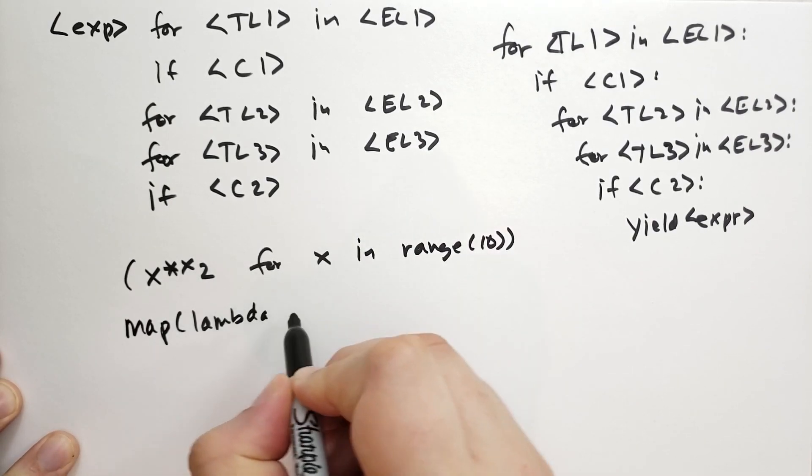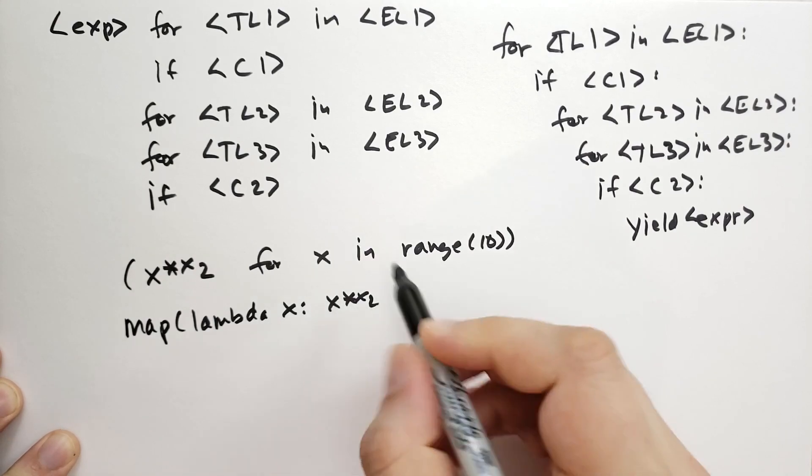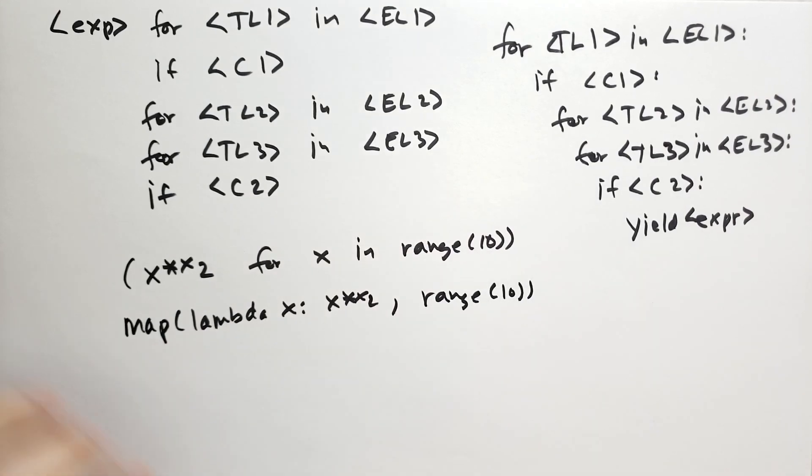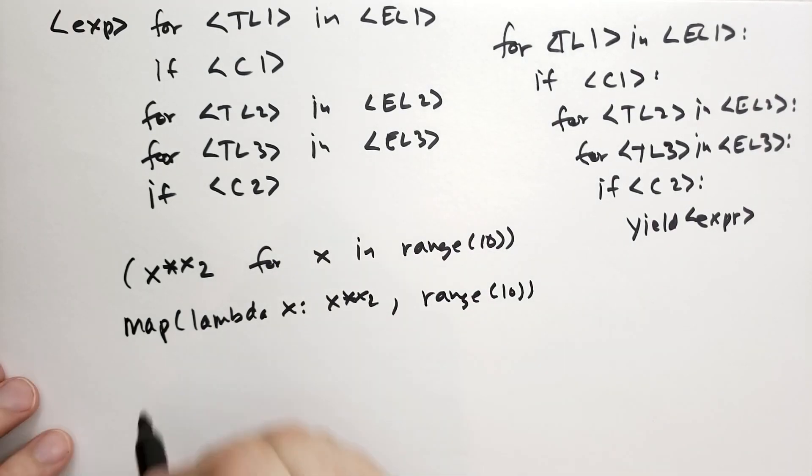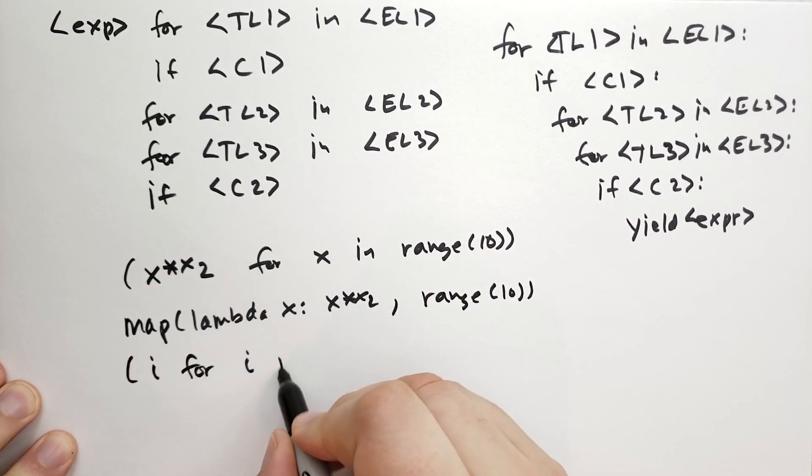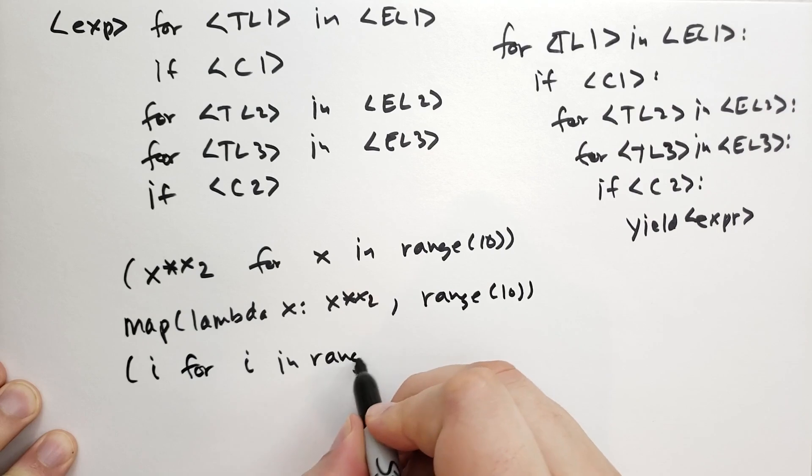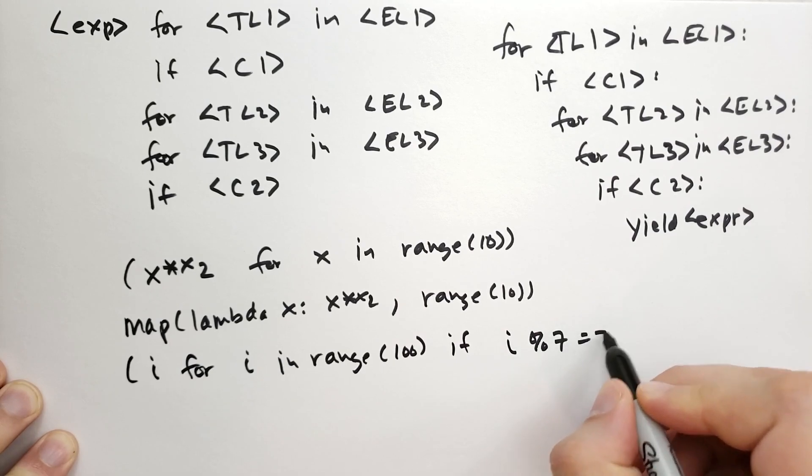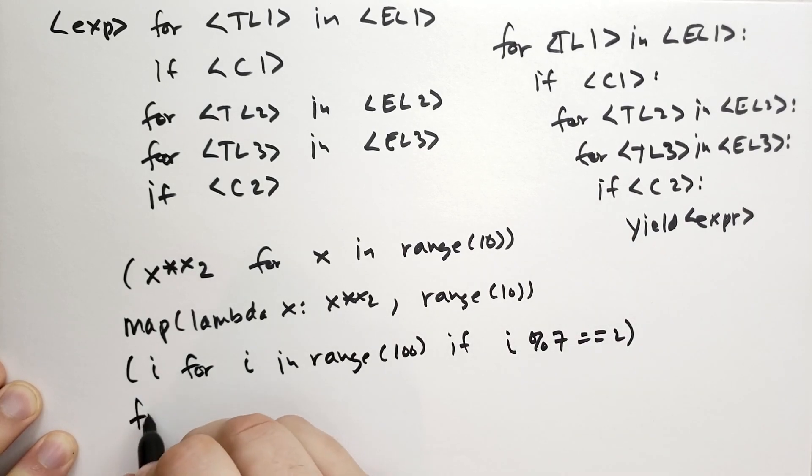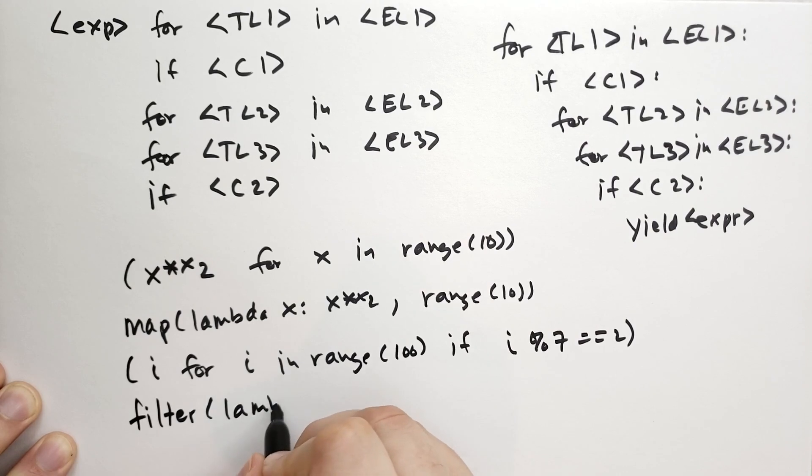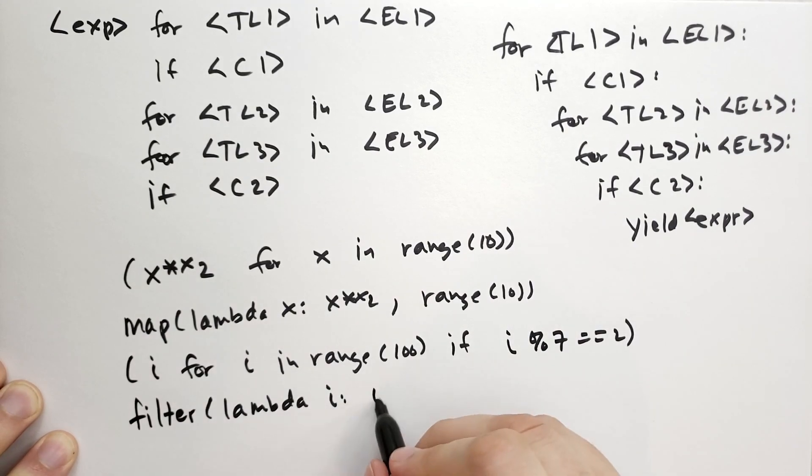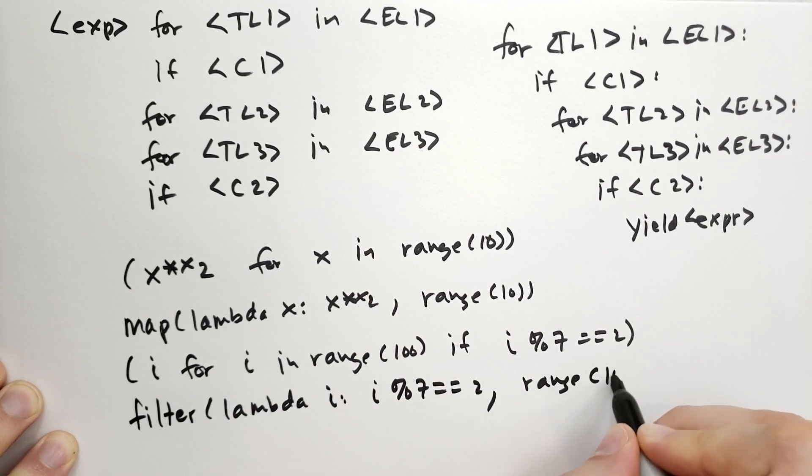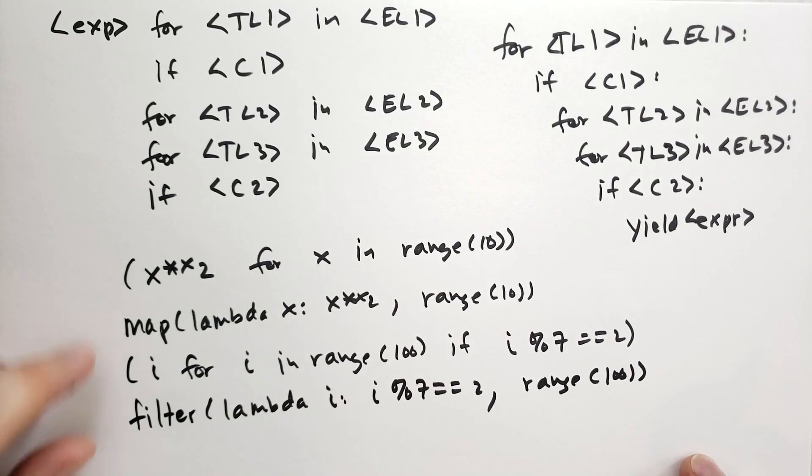And to replace the filter function we could have i for i in range 100 if i%7 == 2. So these two are exactly the same.